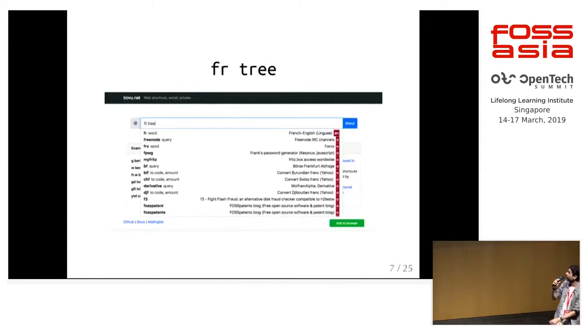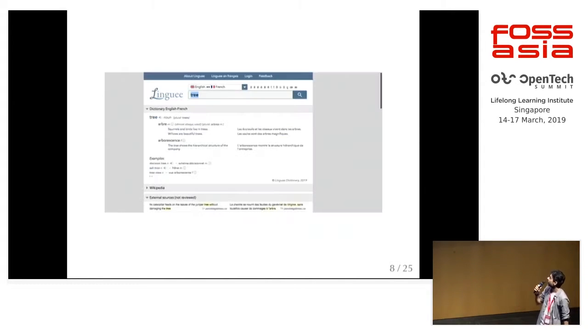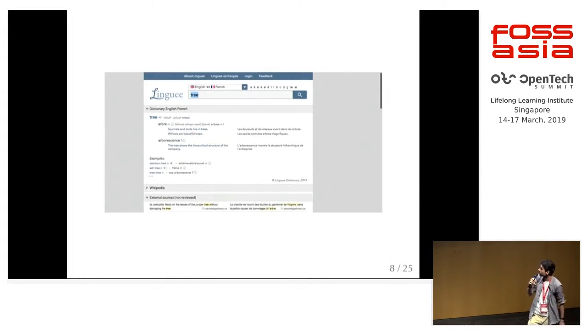We can type in 'FR3', which is the French dictionary shortcut. It takes us to the French-English dictionary with a translation for 'tree'.